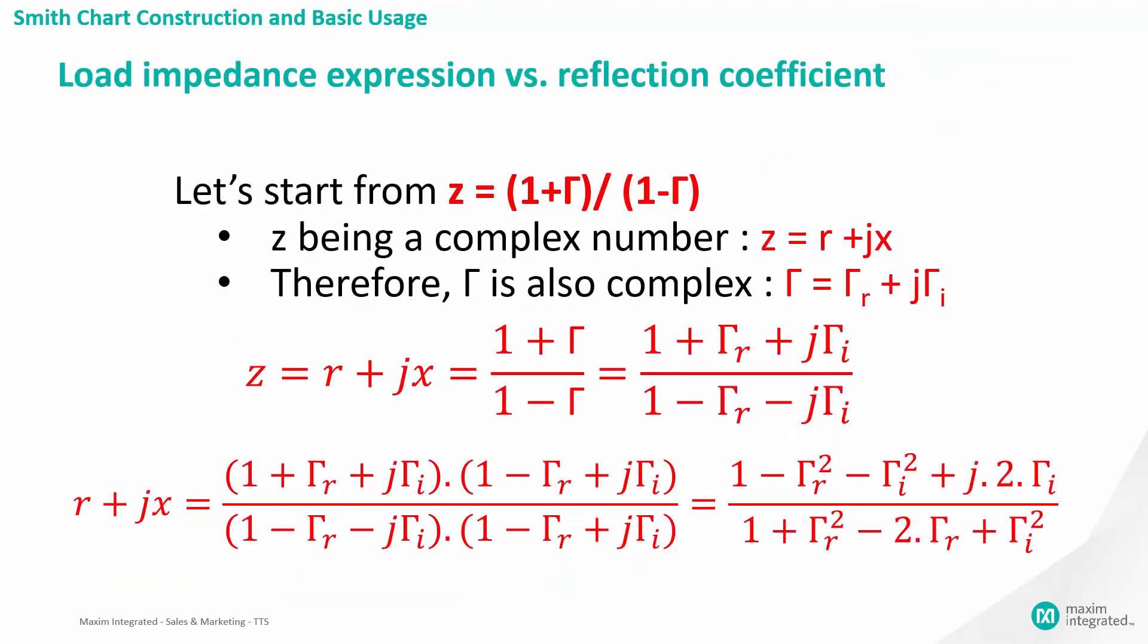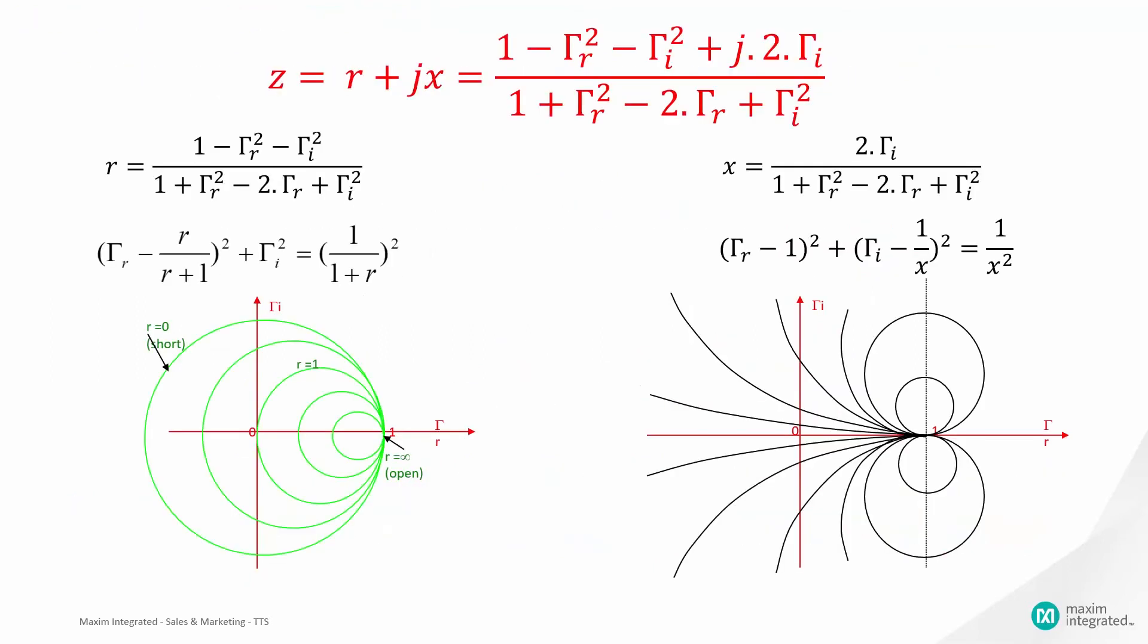Now, we can rewrite the Z expression to understand the two sets of circle equations on the Smith chart. As you may remember from college, when complex numbers are equal, both their real parts and imaginary parts must be respectively equal, thus giving two different equations.